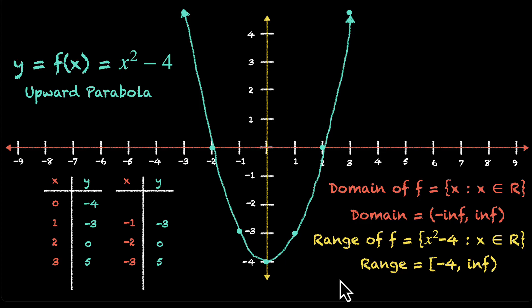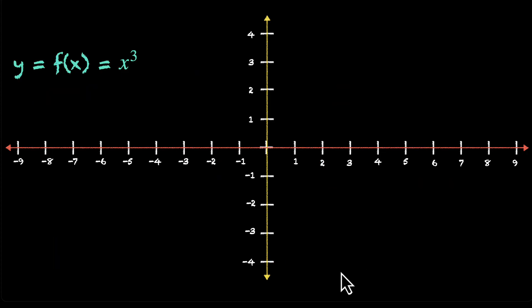But let's quickly practice visualizing one more polynomial function before we wrap this up. y equals to f(x) equals to x cube. If you want to give this a shot, pause the video. Try this on your own. Okay, you can plot in some values. x and y, if you put in 0, you get 0. So 0, 0 is here.